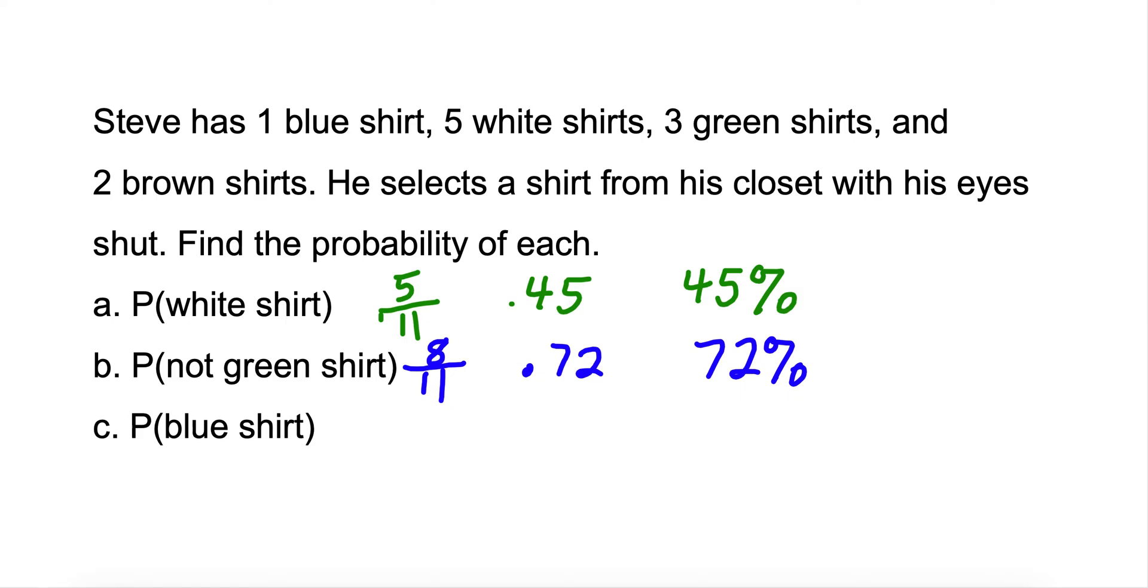For our last question, what is the probability of a blue shirt? He only has one blue shirt out of 11. If these were fractions that we can simplify, we should simplify them, but as 11 is our denominator, there is no simplifying. We take 1 divided by 11, and we get .09 repeating, but we'll just say .09. So a very slim chance of getting the blue shirt, and our percentage will be about 9%.